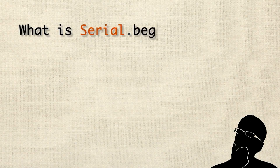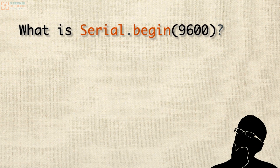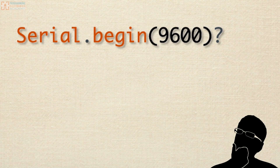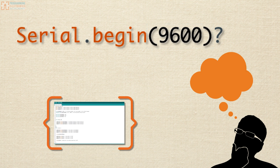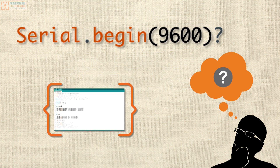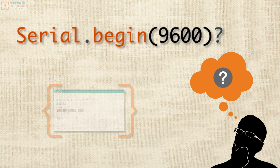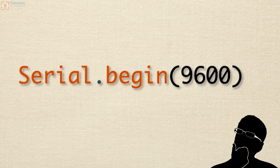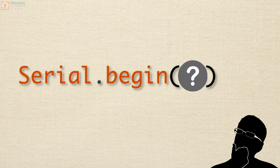Are you wondering what Serial.begin() with that 9600 in the parentheses does? You've probably seen it in almost all the Arduino programs you've looked at. But what's it there for? Do you even need to use Serial.begin()? What if you change the number 9600? What's 9600 even mean?